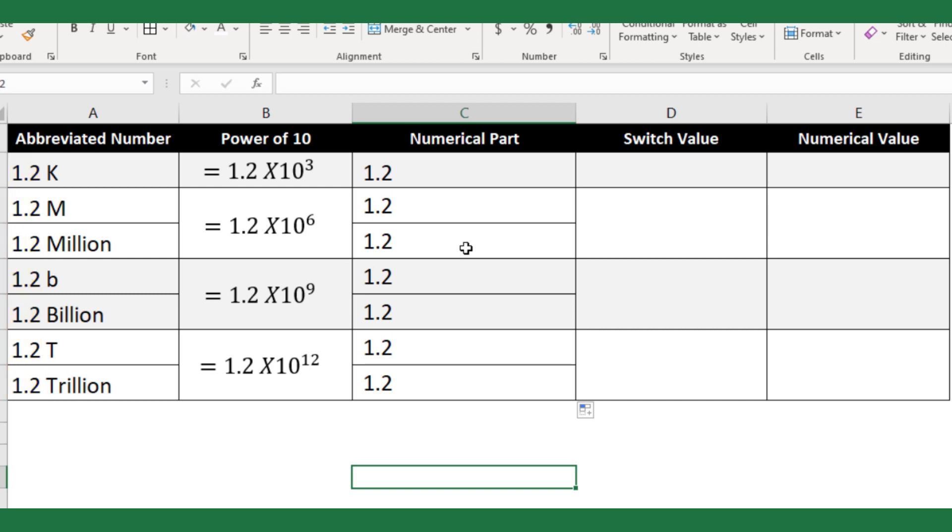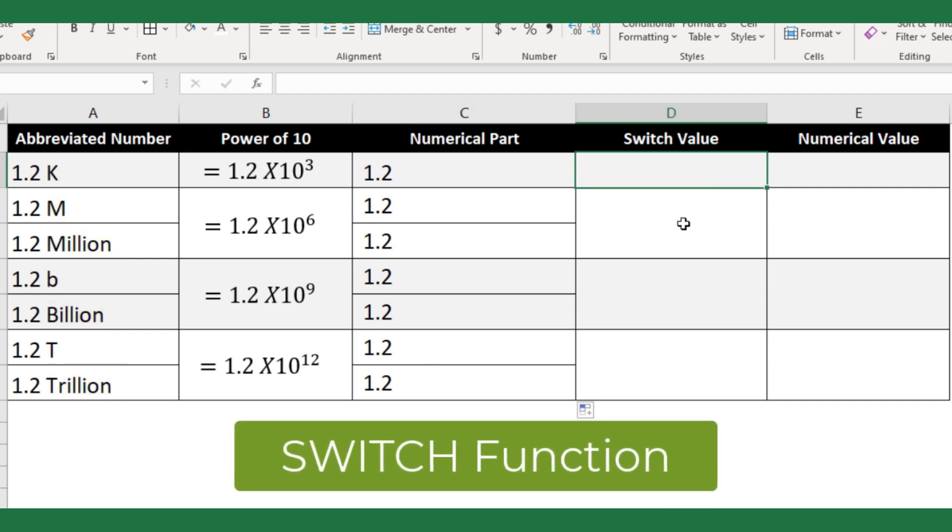As said earlier, this extracted number to be multiplied with power of ten to convert to a real number. But before we do the multiplication, let us try to convert the suffix letters to power of ten. This can be done in several ways, but here I will use Excel SWITCH function.